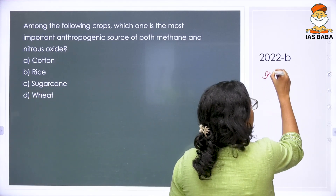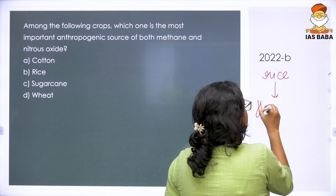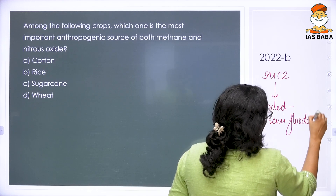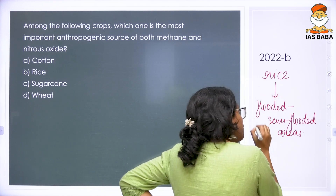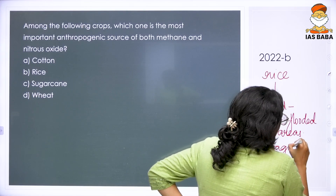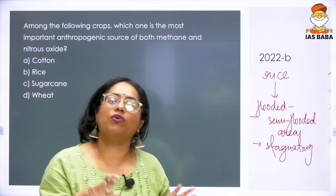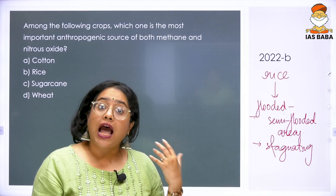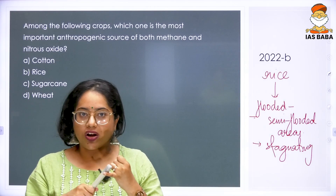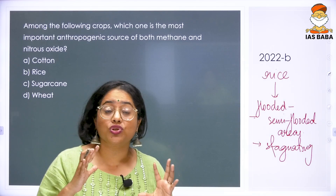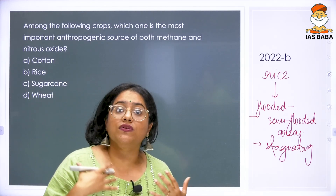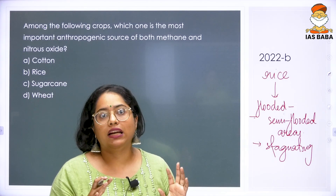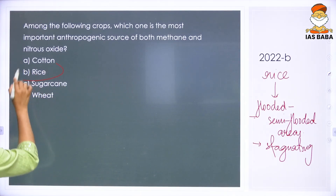Rice is primarily grown in flooded and semi-flooded areas with stagnating water. When water stagnates, microorganisms start growing in it. Because of that stagnant condition, microorganisms and organic matter mixed with water cause decomposition, releasing methane. Additionally, rice is given fertilizers, and the fertilizer causes nitrous oxide release. The decomposition causes methane release. The answer to this question is rice.